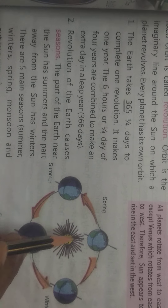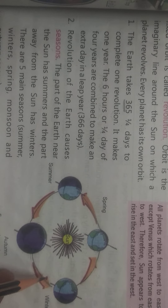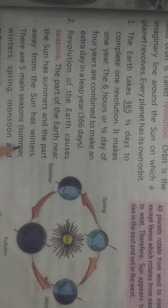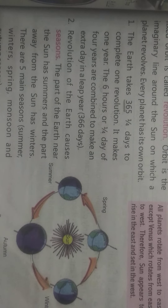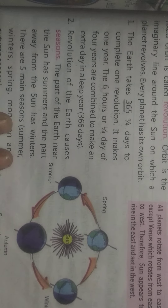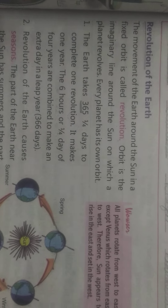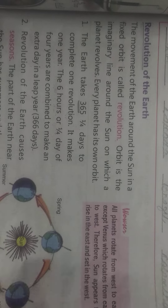There are five main seasons: summer, winter, spring, monsoon, and autumn season. This is all about the revolution of the earth.